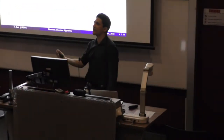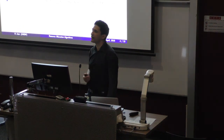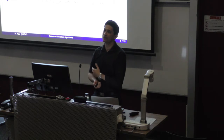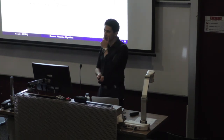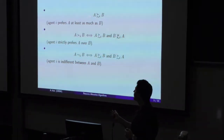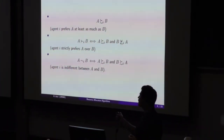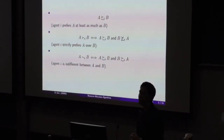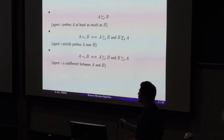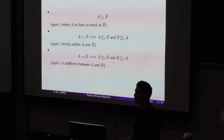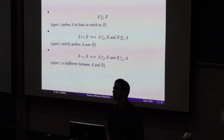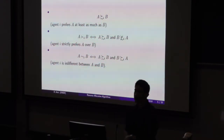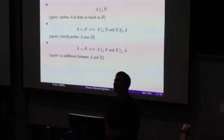We partition items among agents, and each agent derives some preference or utility from getting that particular subset. Regarding notation: when set A is at least as preferred as set B by agent I, we write a corresponding symbol. We also have strictly preferred, and an indifference symbol meaning agent I has the same utility for both set A and set B.